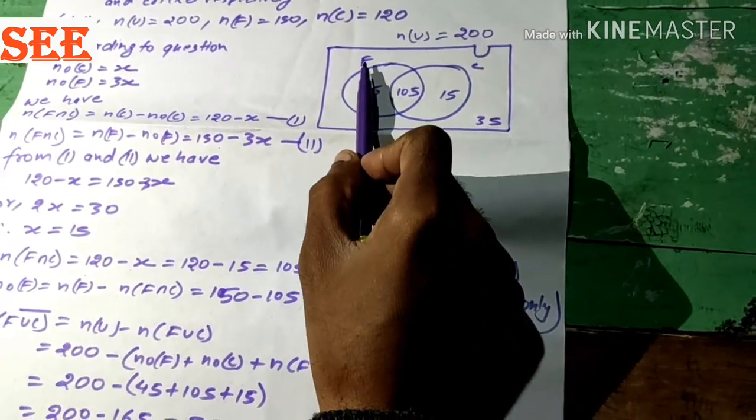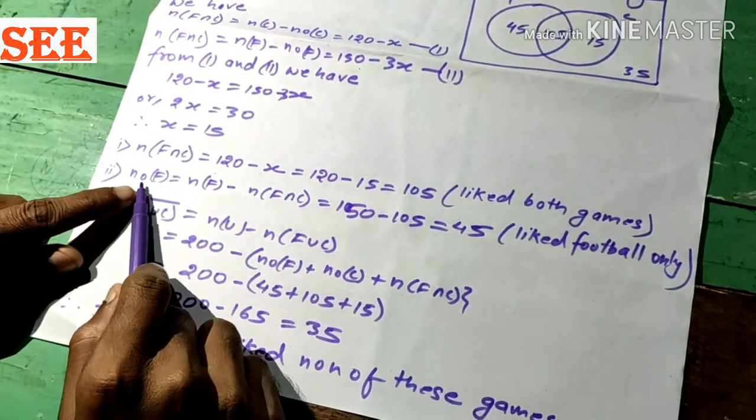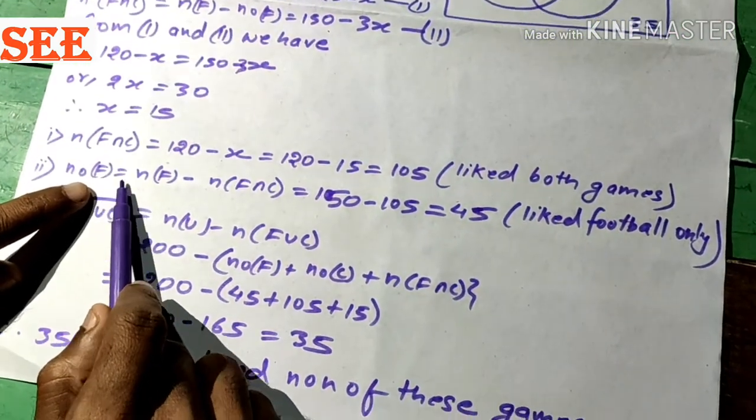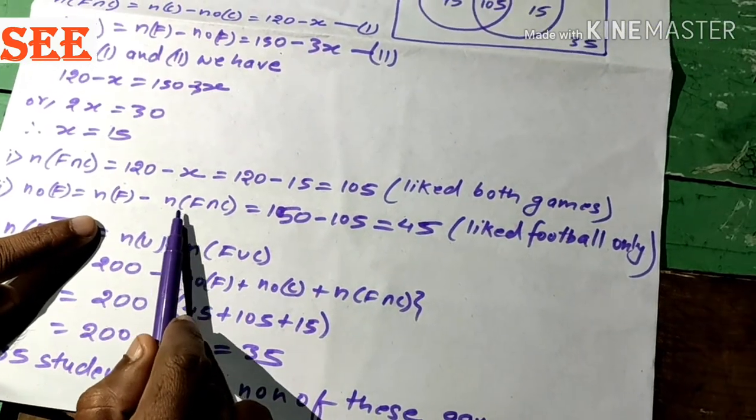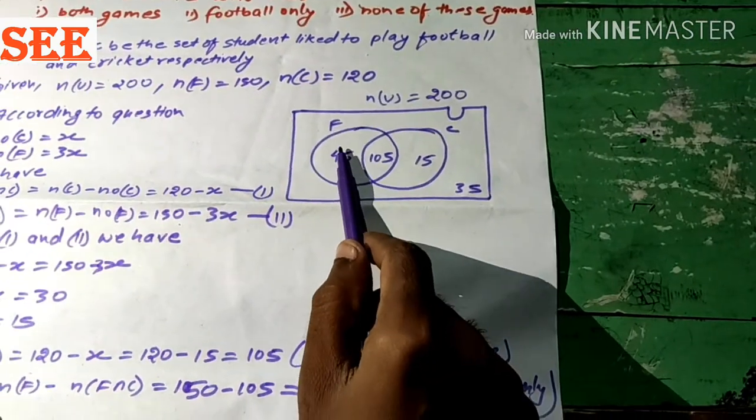Similarly, n(only F) = 45. It means in second question I have got that. And only F = n(F) - n(F ∩ C) = 150 - 105 = 45, which is only F.